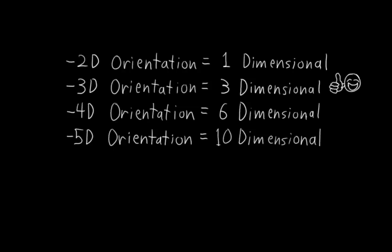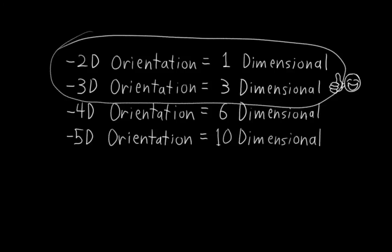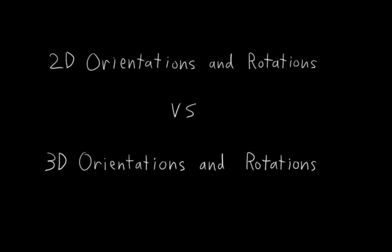Anyway, all of this is beside the point. The only thing we care about here is that orientations in 2D space are one-dimensional, and orientations in 3D space are more than one-dimensional. But why does it matter that 2D orientations are one-dimensional and 3D orientations are not? The reason it matters is because of how it impacts 2D and 3D rotations. So here we are now, finally talking about rotations, and this is where the real mind bending begins.